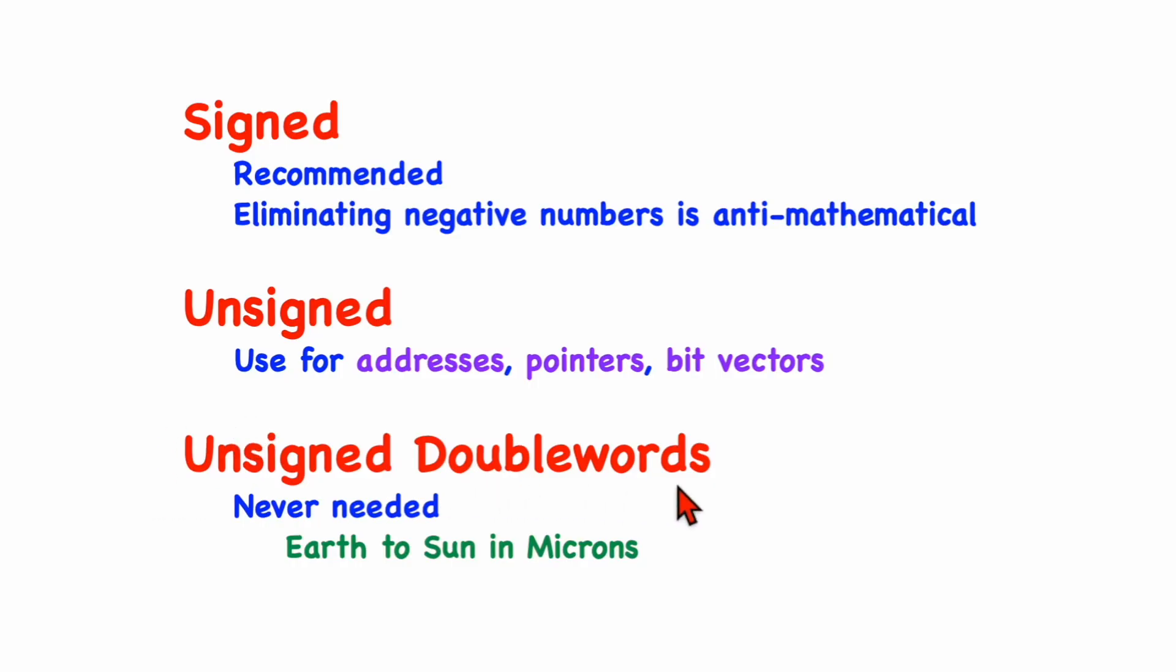When it comes to double words, the range of signed values is just gigantic. For example, you can represent the distance from the Earth to the Sun in microns. So I would say there is never a reason to use an unsigned double word. I do see that being used out of habit for addresses and pointers, because those things don't go negative. But I think there's really no excuse for unsigned double words.